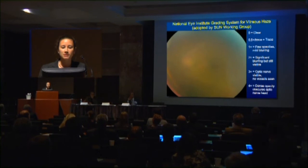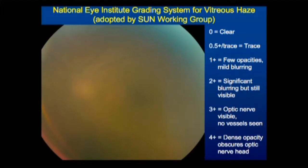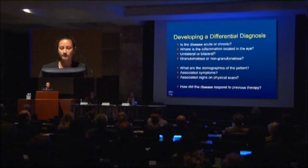There is agreement about how to grade vitreous haze. This is a grading system using a 20-diopter lens, looking into the back of the eye at the optic nerve, based in part on how well you can see the optic nerve and the vessels. So this photograph would be just about a 3-plus eye.